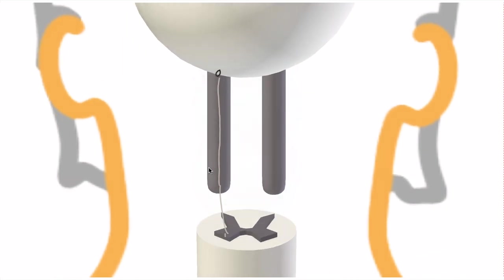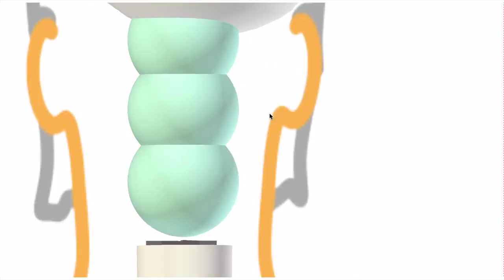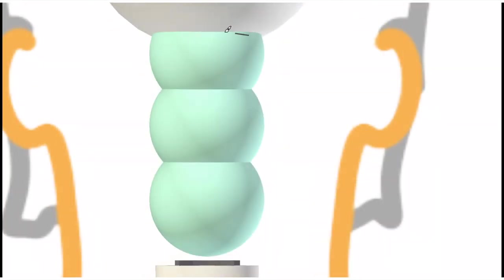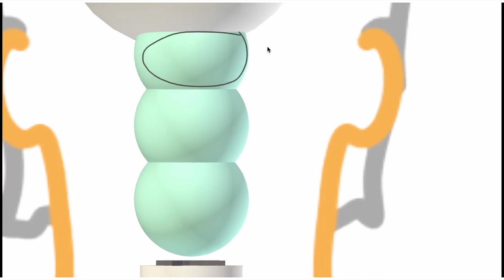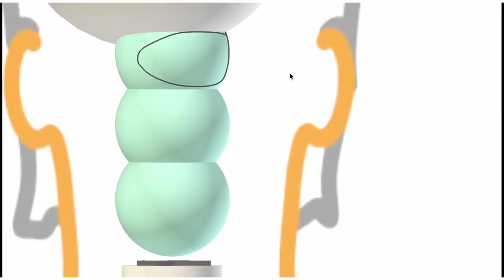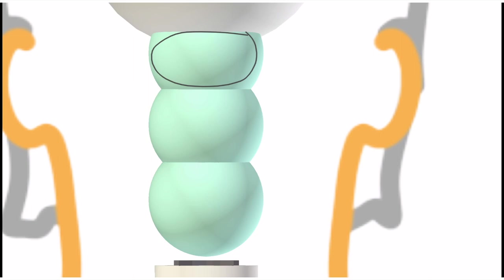The tectospinal tract begins in the tectum, which is this part of the midbrain. Within the tectum we have these little mounds of gray matter called colliculi, Latin for mount. We have superior colliculi and inferior colliculi. The superior colliculi receive visual info, the inferior receive auditory.